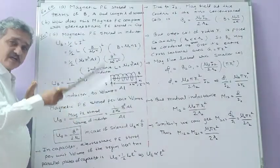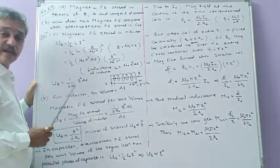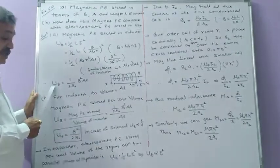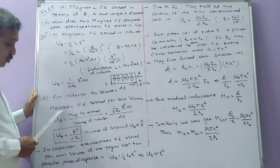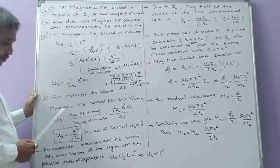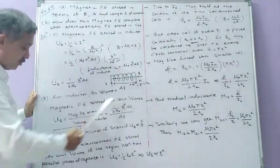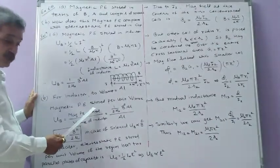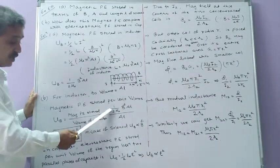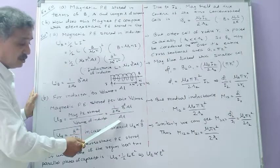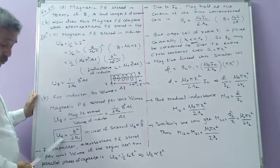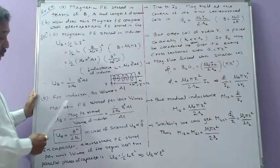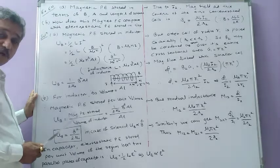The cross-sectional area A times the length L gives the volume of the solenoid. Dividing the potential energy by the volume gives magnetic potential energy stored per unit volume. So magnetic potential energy per unit volume is small u subscript B = capital Ub upon volume = (1/2 mu0) B squared A L divided by A L, which simplifies to small u_B = B squared upon 2 mu0.